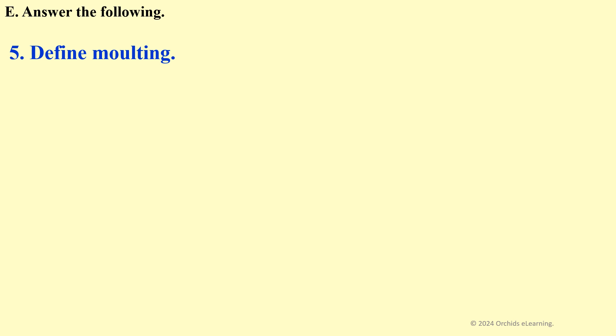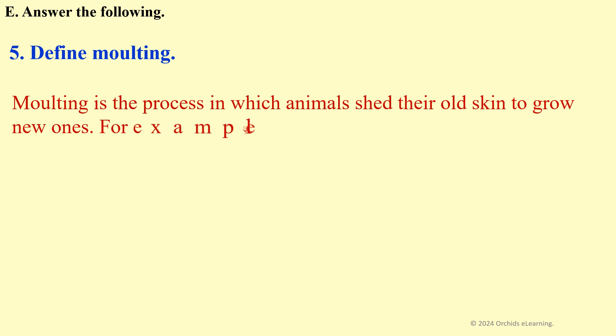Moulting: Define moulting. Moulting is when animals shed their old skin to grow new ones. For example, a snake sheds its skin to acquire a new one.